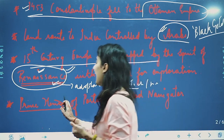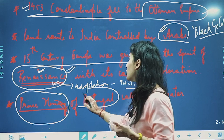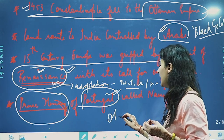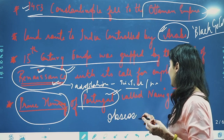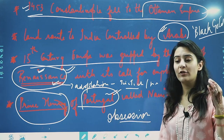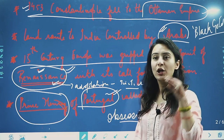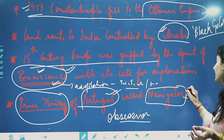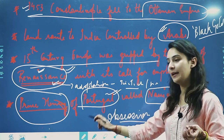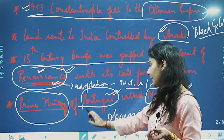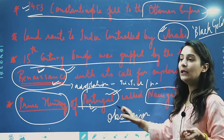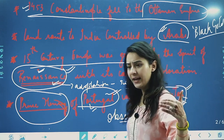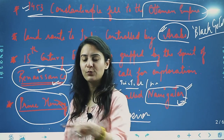Another important static point is Prince Henry. Prince Henry of Portugal was very obsessed — highly obsessed with exploration. He wanted to do exploration, and he was motivated towards discovery. Prince Henry belonged to Portugal and was highly obsessed because he was an explorer by nature.